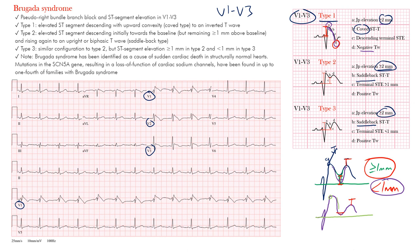Looking at the example EKG — in V1, V2, and V3 — let's focus on V2. Notice the ST segment comes up, then comes down and drops below the baseline into a negative T wave. This is actually a Type 1 pattern. So this is Brugada syndrome, or the Brugada pattern Type 1.